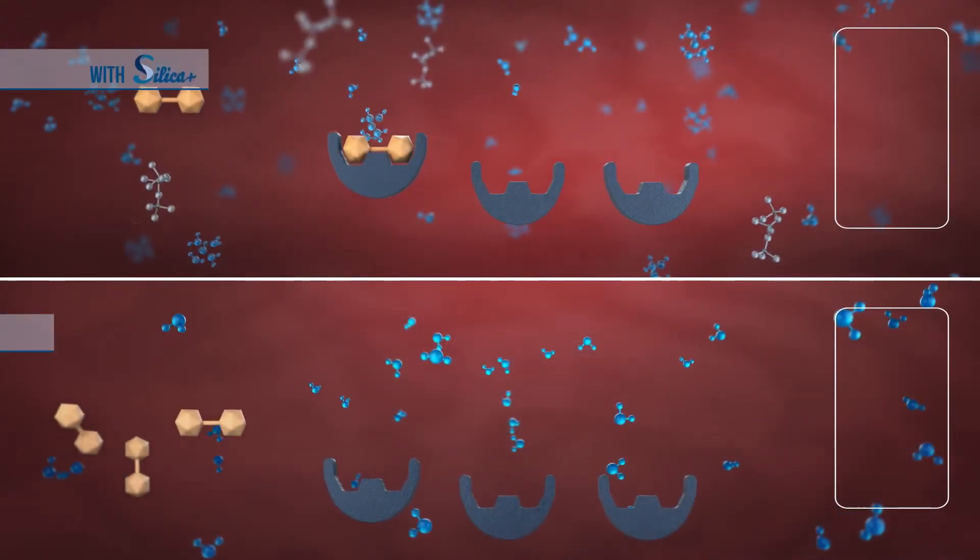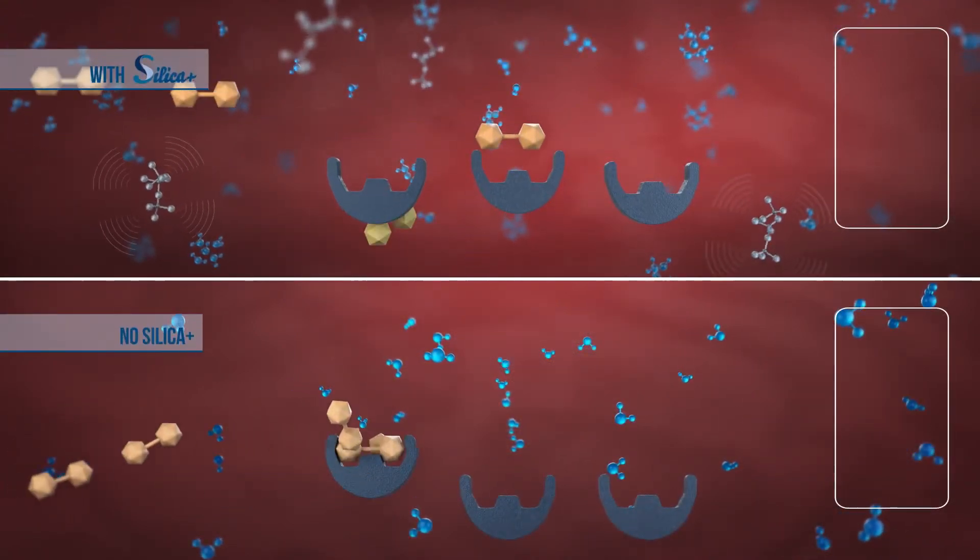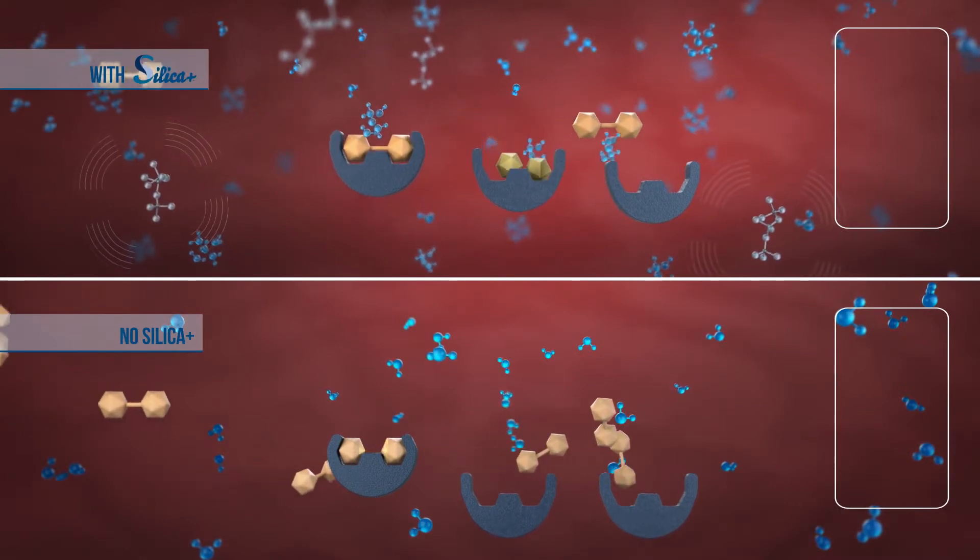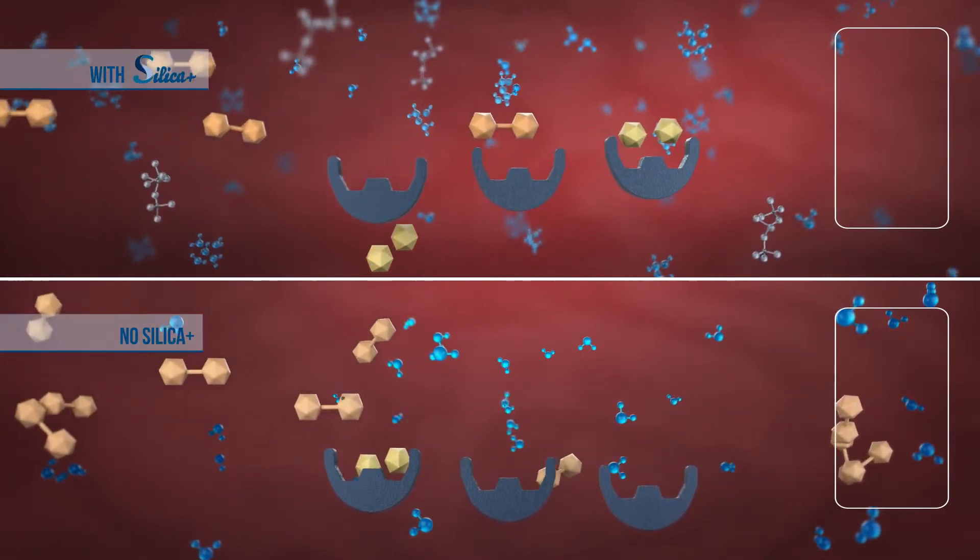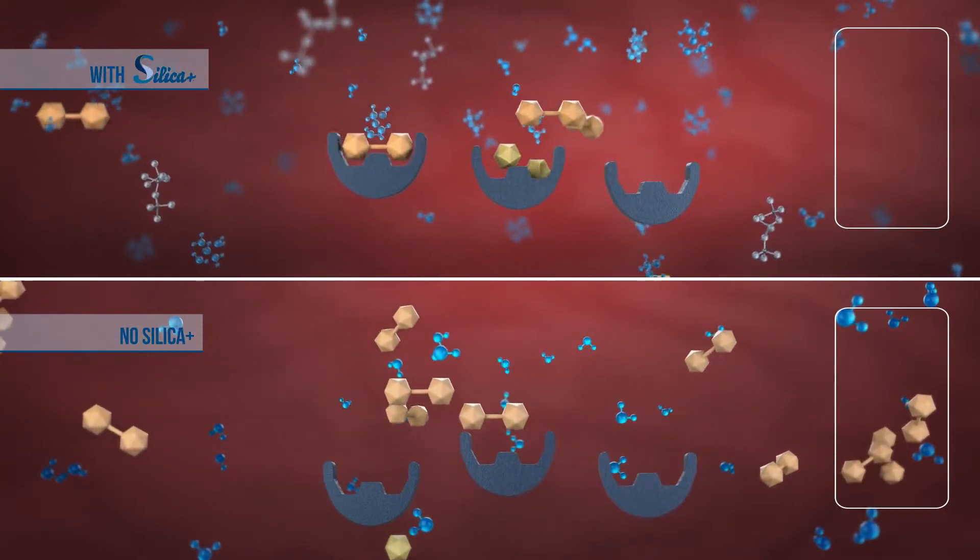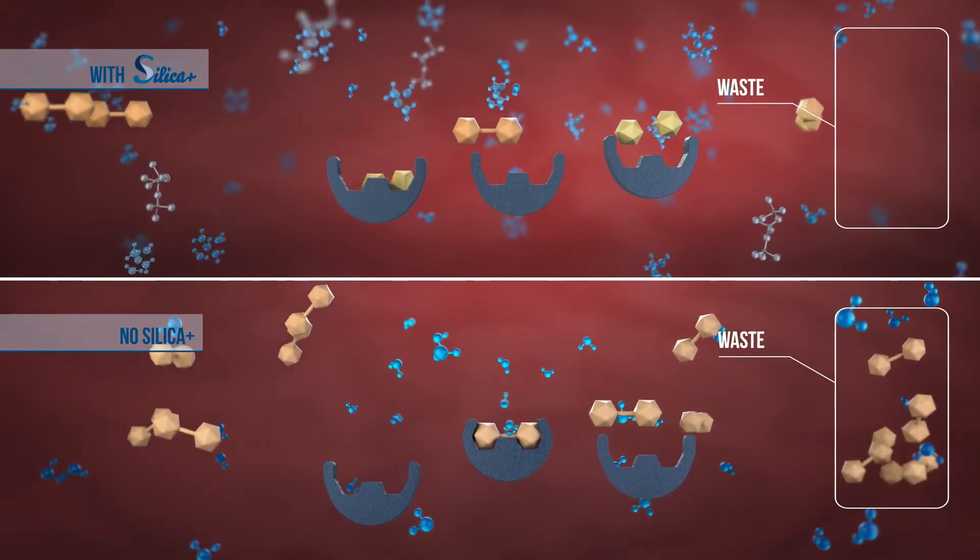The quicker this reaction occurs, the more proteins the enzyme can split up. By increasing the speed of the reaction, Silica Plus allows more protein to be digested and less protein is lost as waste.